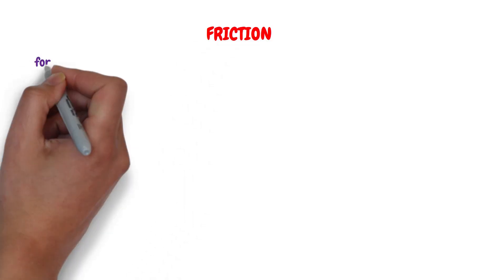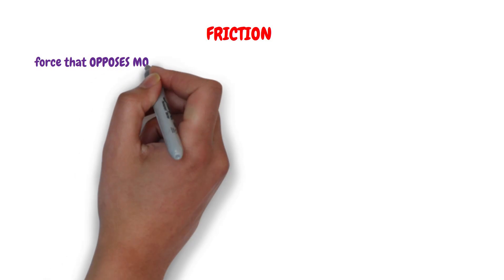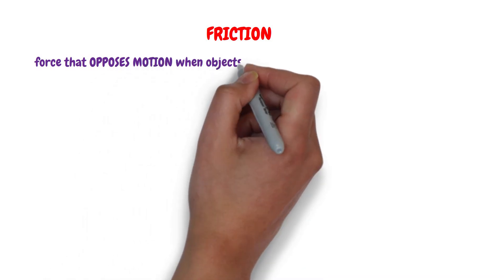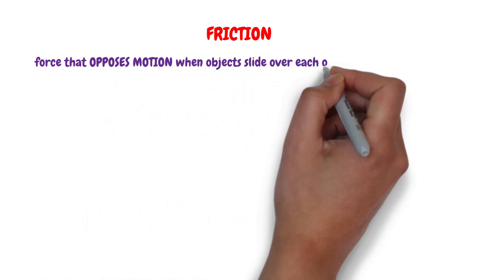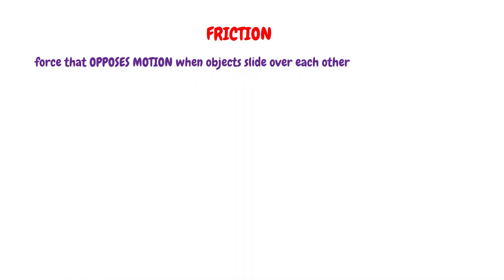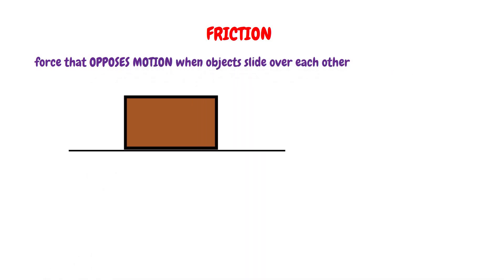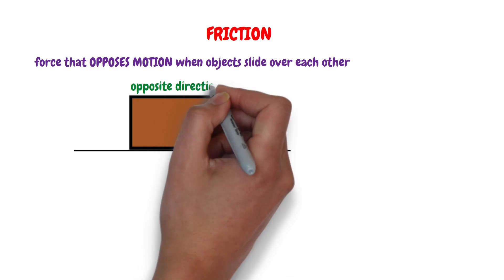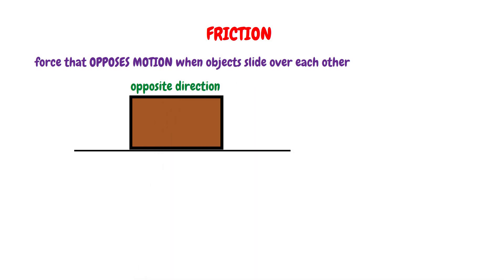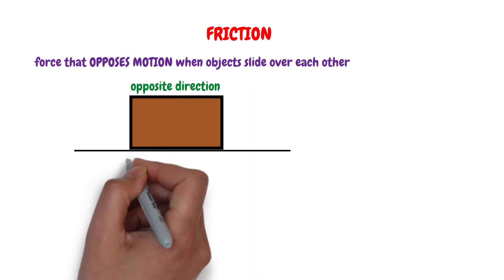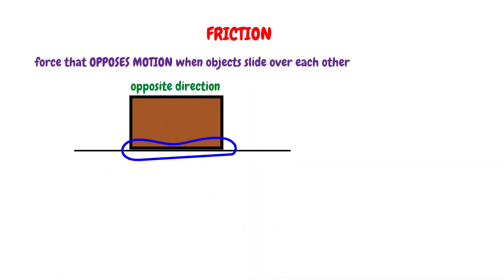This video covers friction. Friction is the force that opposes motion when objects slide over each other. For a moving object, friction acts in the opposite direction to the object's direction of motion, and it always occurs at the point of contact.